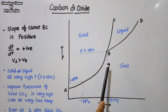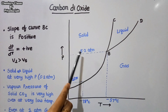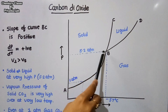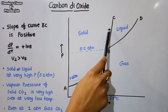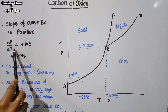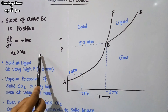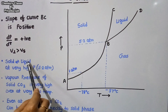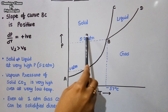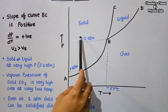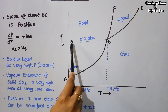Now the specific characteristics of the CO₂ curve: in contrast to the water curve, the slope of the fusion curve BC is positive — it is away from the pressure axis. This means dP/dT is positive, so the volume of liquid is greater than the volume of solid. Also, the liquid phase of CO₂ is present only above 5.2 atmospheric pressure, so at low pressure liquid carbon dioxide does not exist.